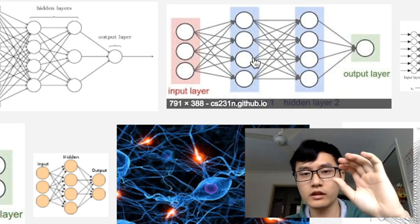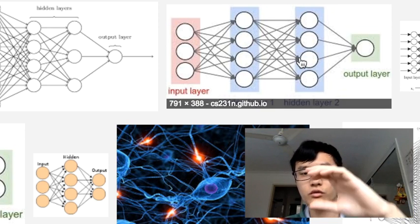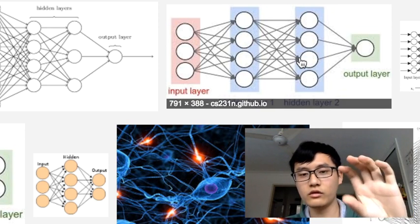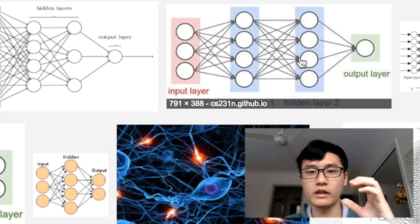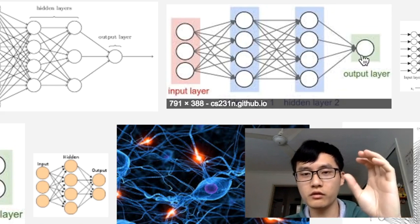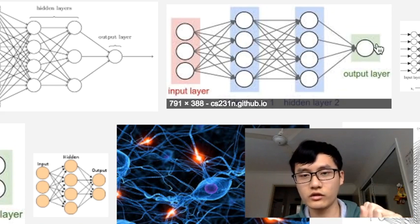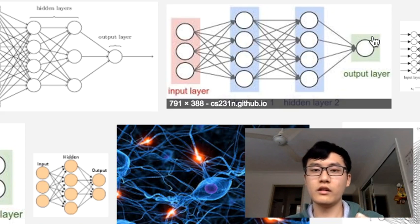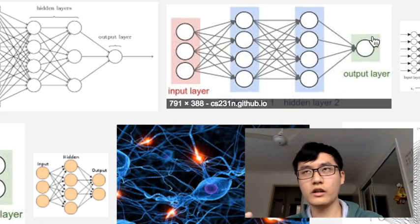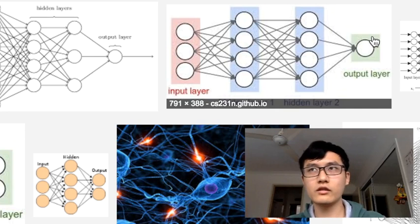The information goes through the input layer and through the hidden layers to analyze and calculate, then outputs the final result to the output layer to finalize and show what the class or prediction is.